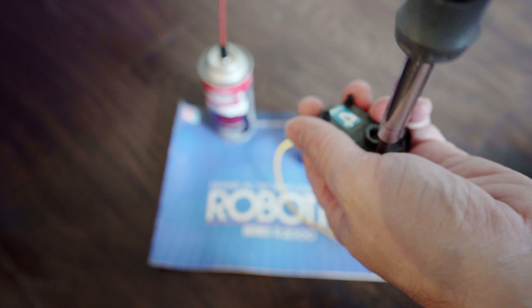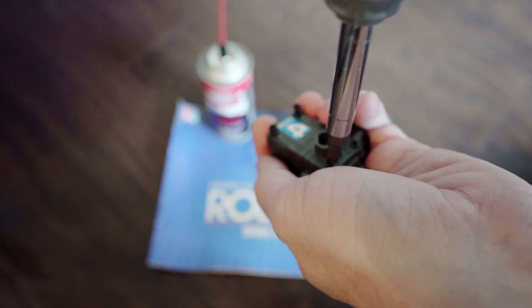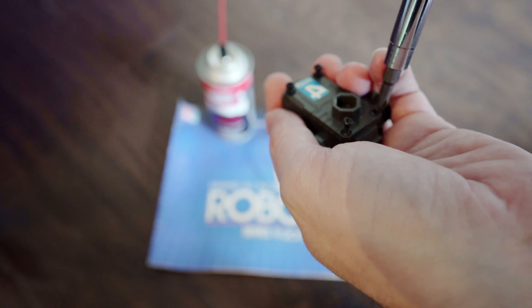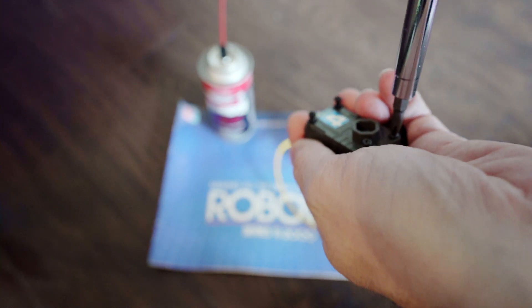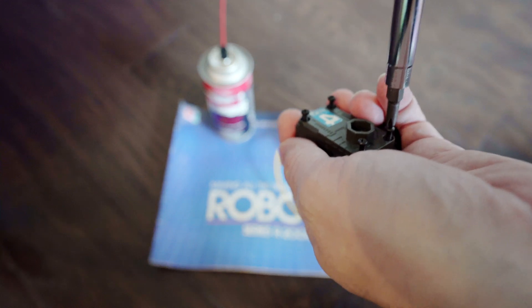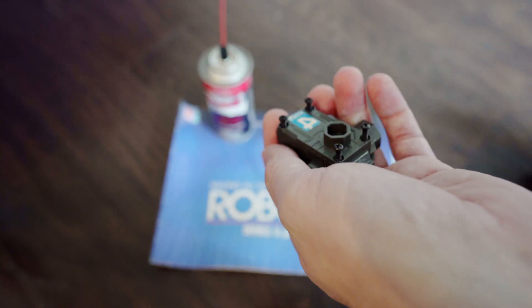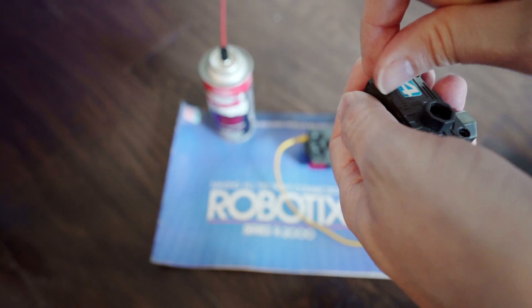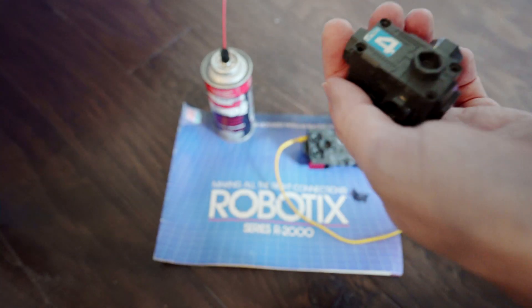Obviously these screws are just threaded straight into plastic, and the plastic on these has gotten a little brittle throughout the years. So you'll want to pay attention when you put those back in to not over tighten them. Just barely tight. They're not going to come out. And if they do, it's easy to screw them back in. Much better than stripping or cracking the plastic.